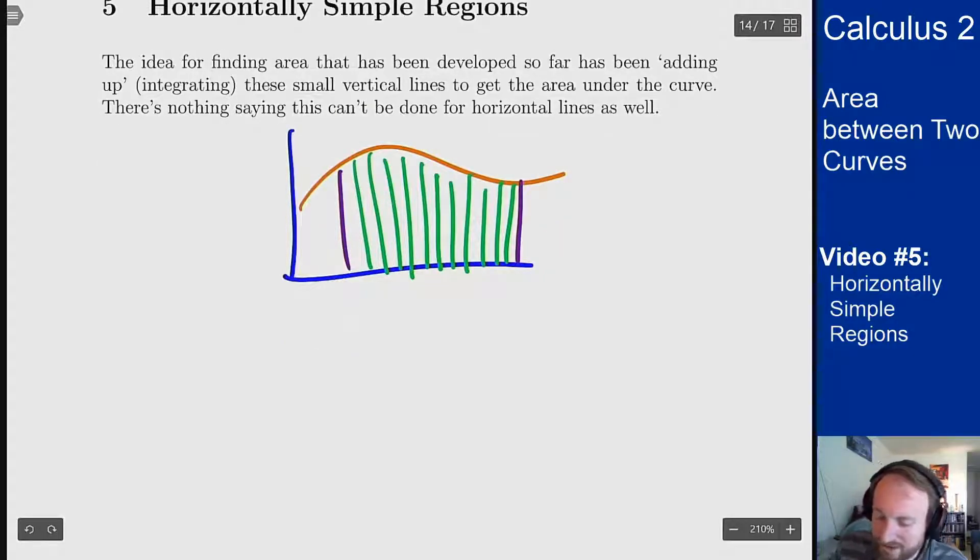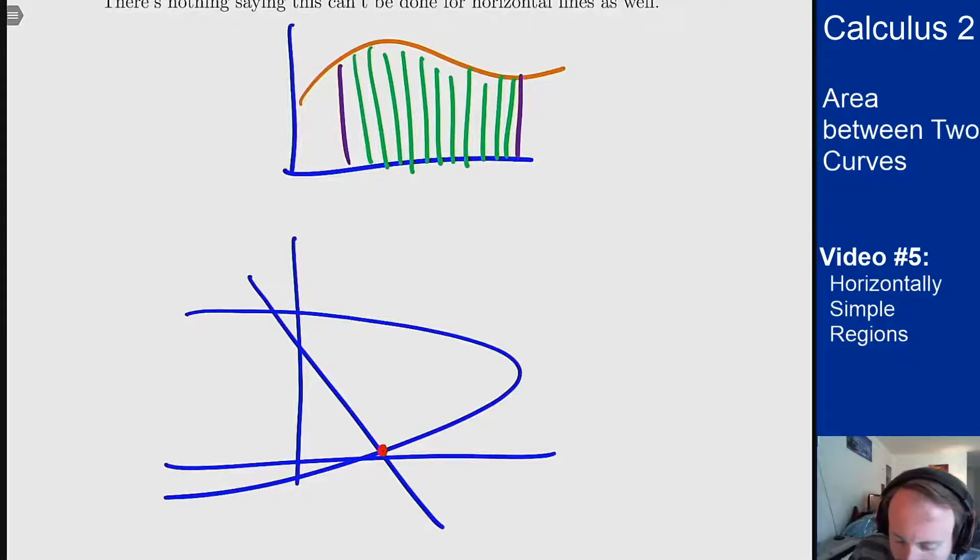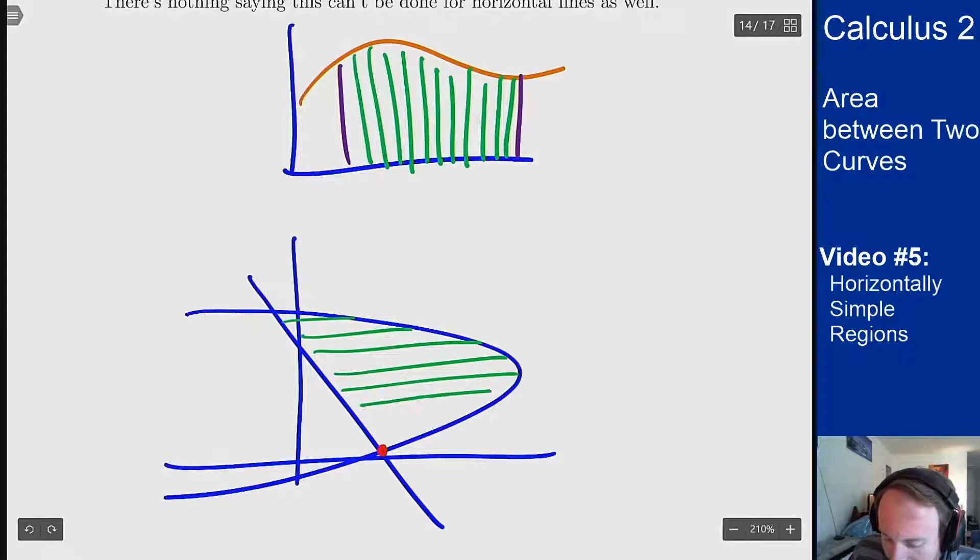Say instead I have a region that looks like this. For this picture doing vertical lines is kind of annoying, mainly because it's not vertically simple. There is a crossover point right down here where things are going to change. And also in the region to the right of that point it's kind of the same function on the top and the bottom. It's the same curve that's looped around in itself to give me the top and bottom there. So it might not be the easiest to handle. However, I can do this by looking at little horizontal lines instead. If I want to add up areas in this direction, that's a lot easier to handle in this case.